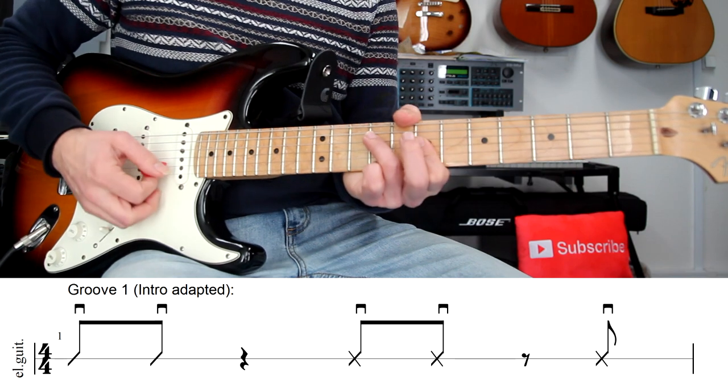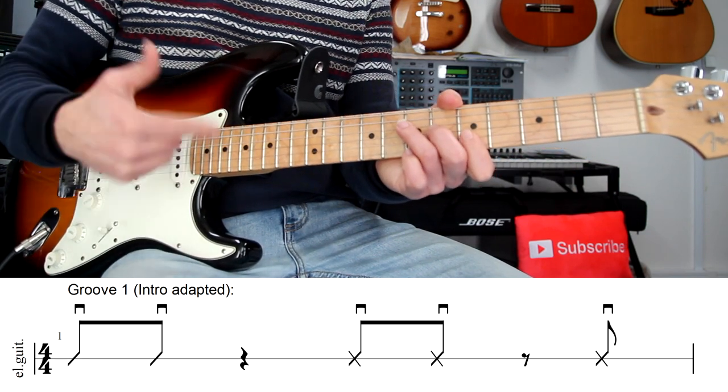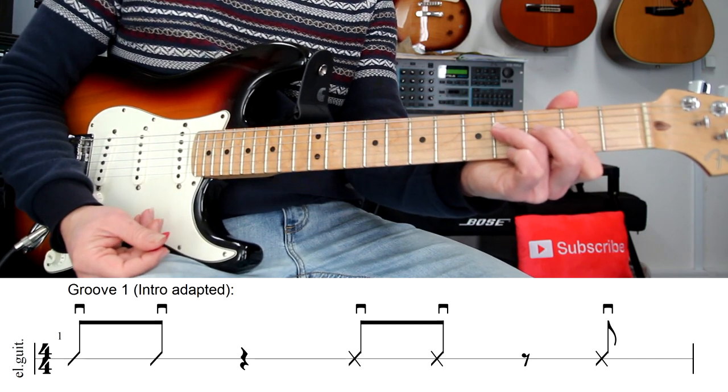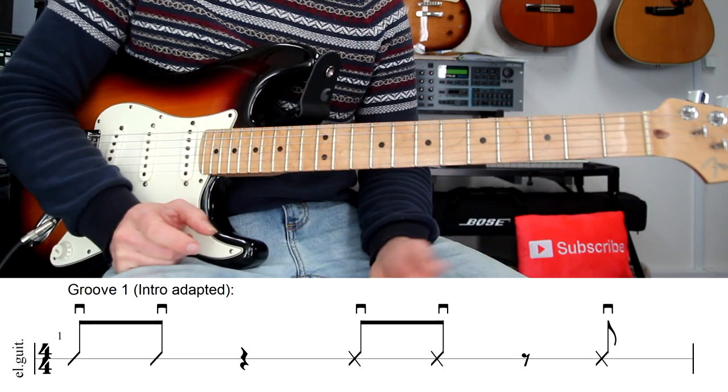So G, one bar, four times. B minor, one bar, four times. A, one bar, four times, and two times here on F sharp minor. So you have to divide the groove with these four chords, as I have just shown you right now.